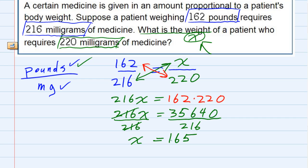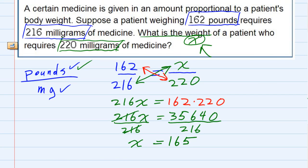Let's check and see if that makes sense. A 162-pound person was using 216 milligrams. If we up that to 220 milligrams, it should be a larger person. 165 pounds is larger than 162, so it looks like our answer makes sense. The weight of the patient is 165 pounds.